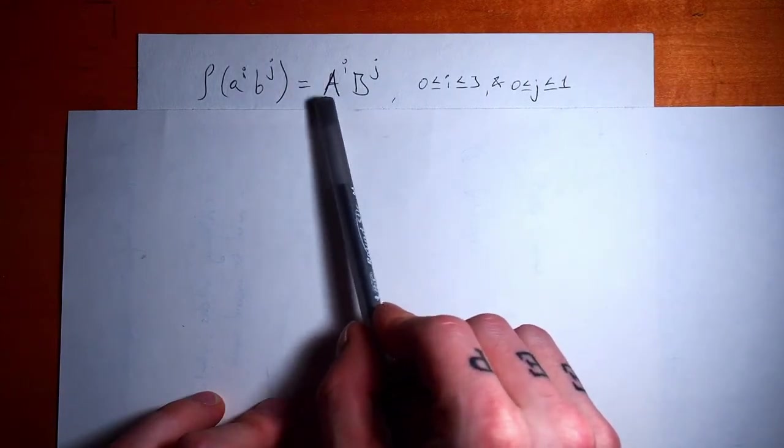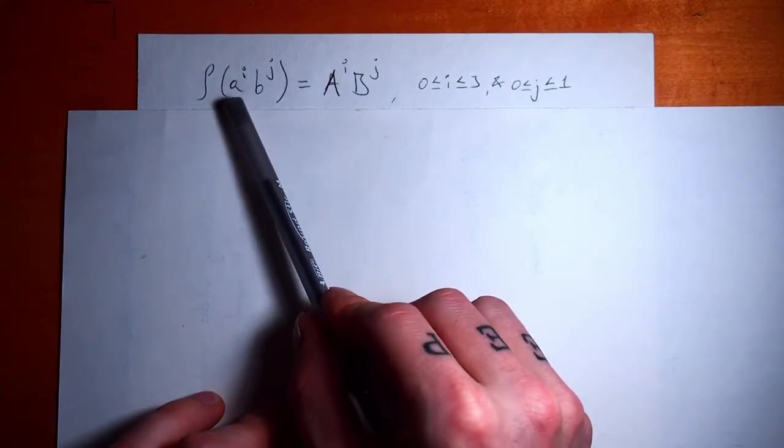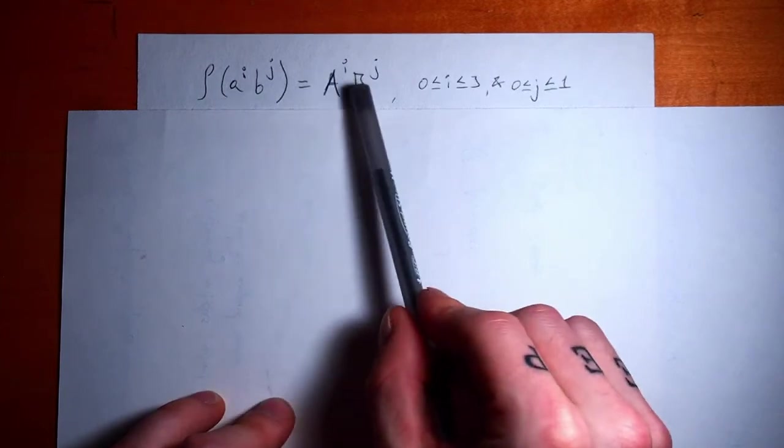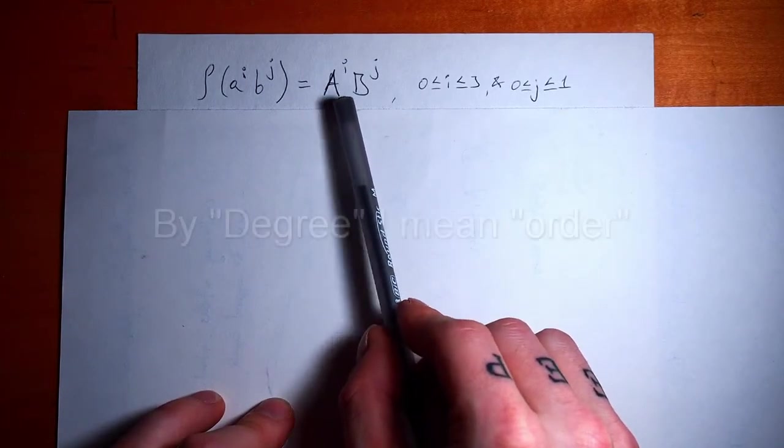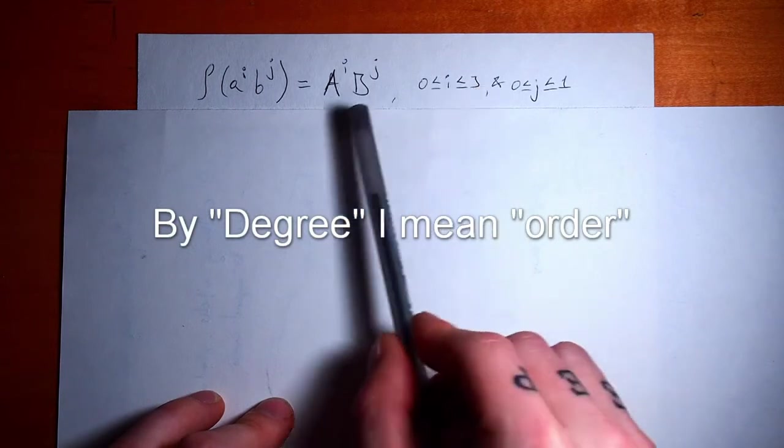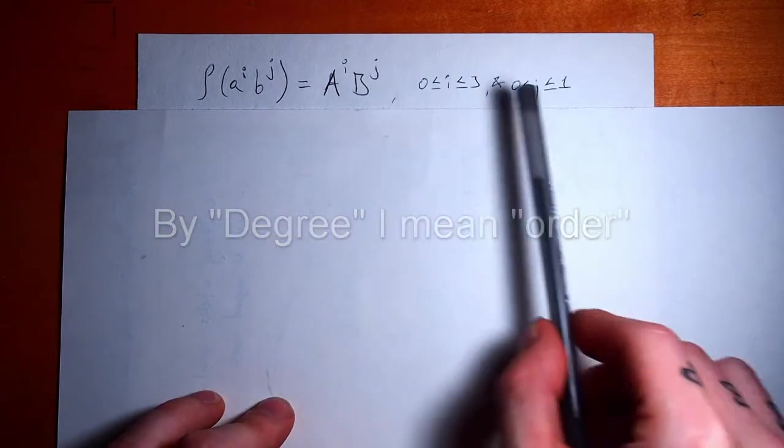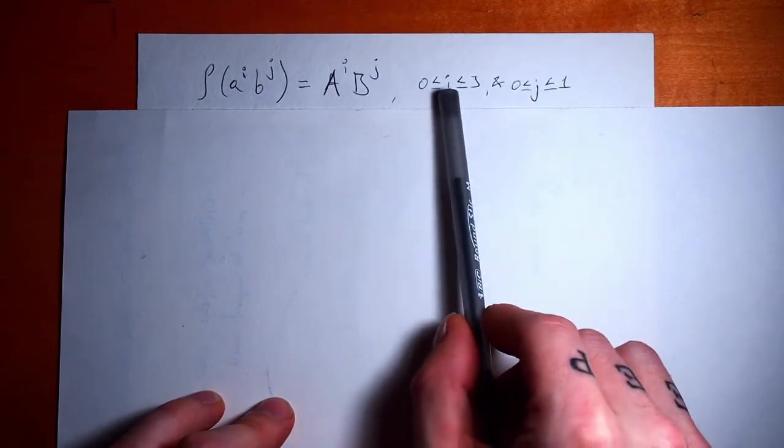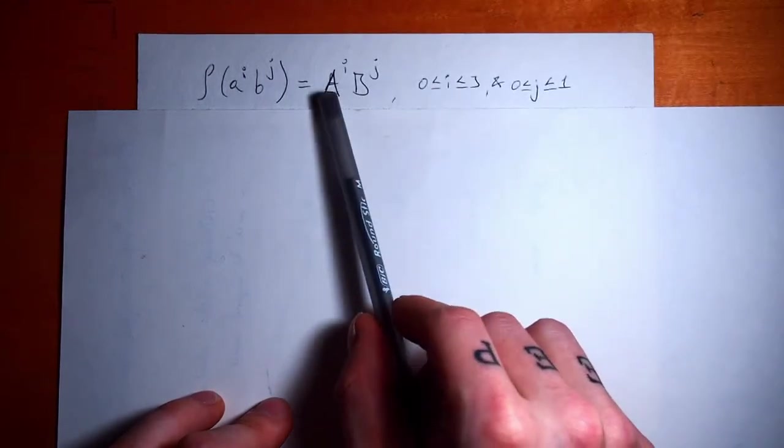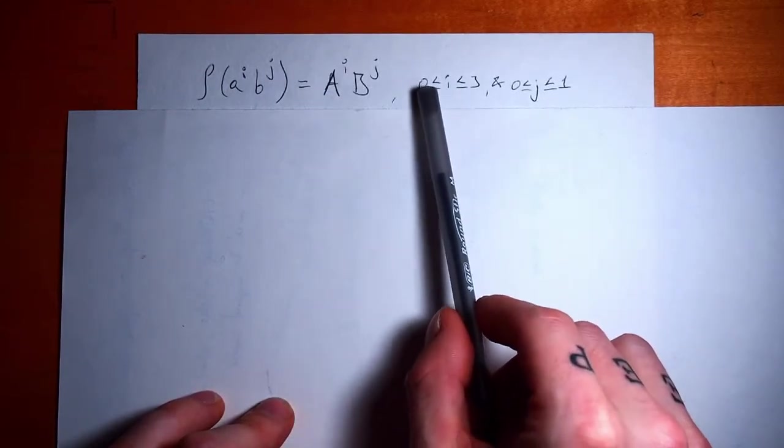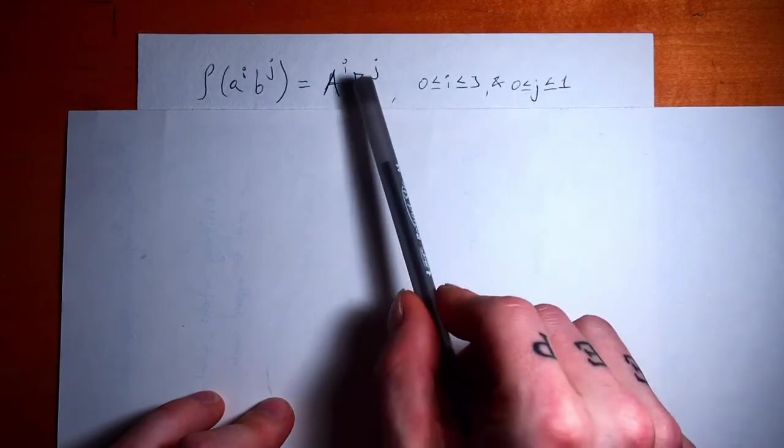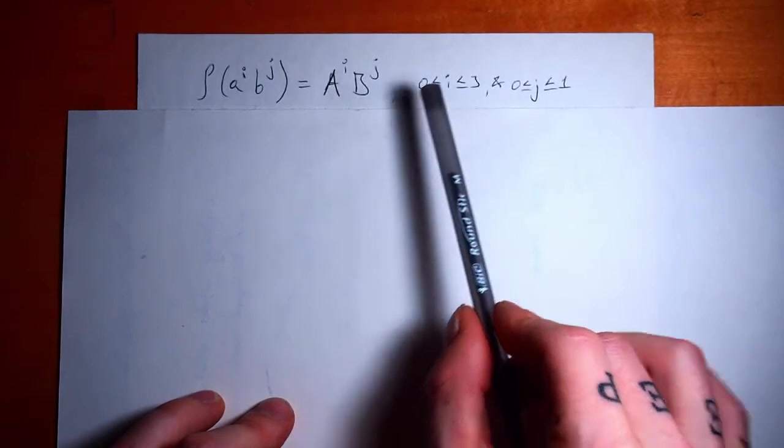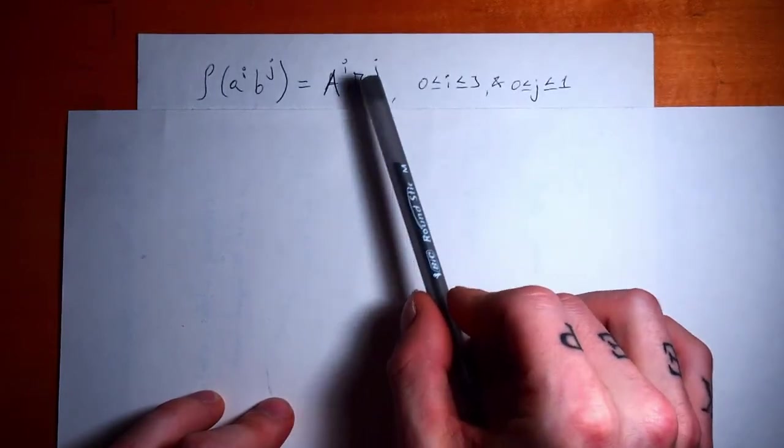And recall that A, whether it's capital A or lowercase A—A in the group before mapping or A in the matrix group after mapping—had degree 4. And B, again, both B's, had degree 2. So i can be 0, 1, 2, or 3. If you get to 4, it's the same as A to the power of 0. And j can be 0 or 1, again, because B squared is just equal to the identity.